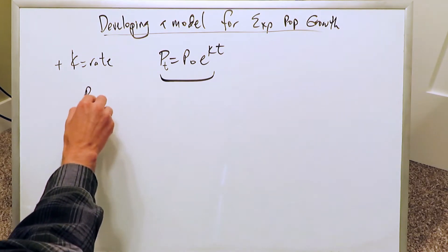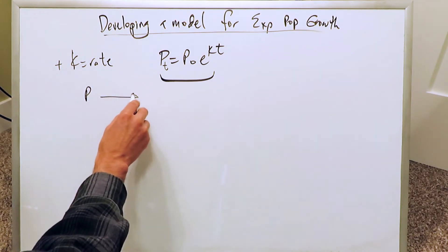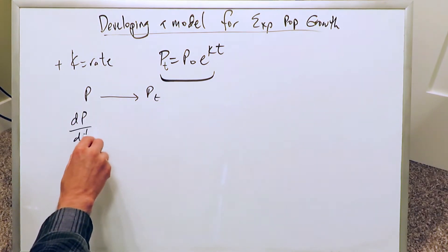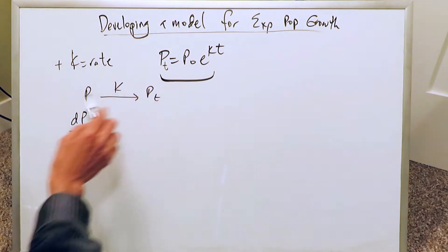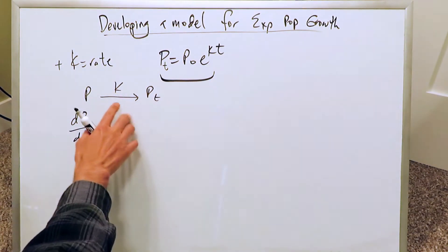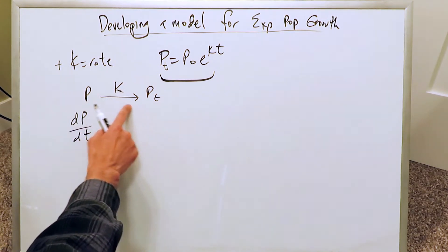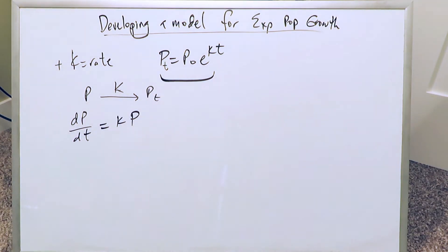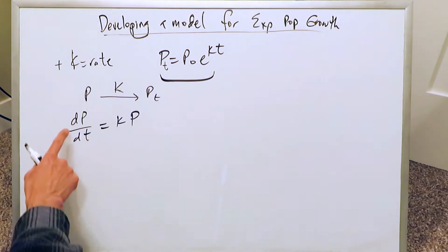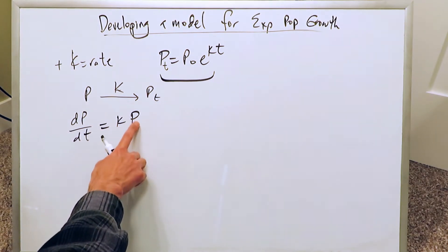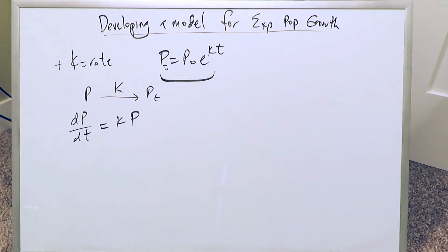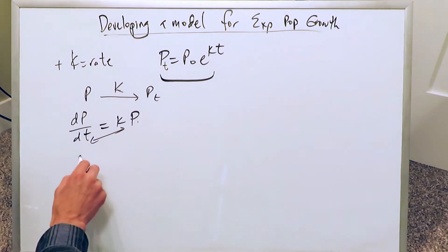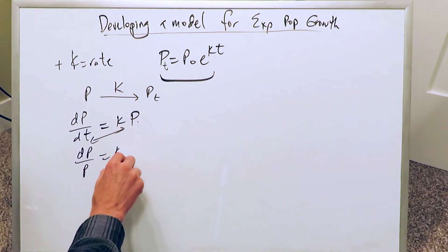If you look at a population over a period of time, you are looking at the rate of change of that population, usually affected by some rate factor k which expresses the change of population over time. The rate of change equation gives us: dP/dt = k·P, and flipping P and dt yields dP/P = k·dt.